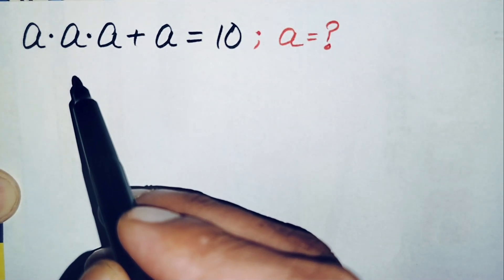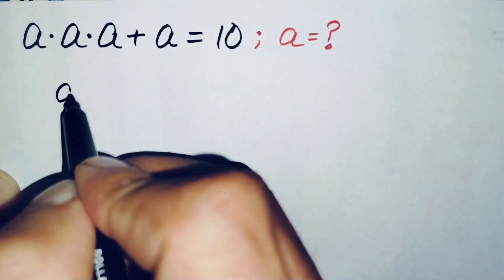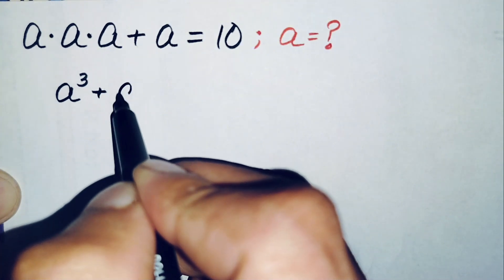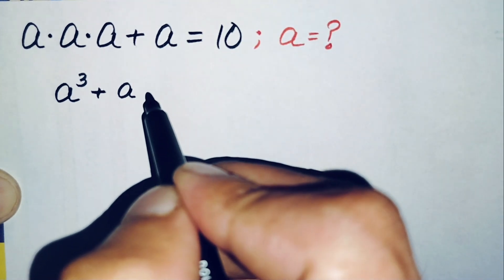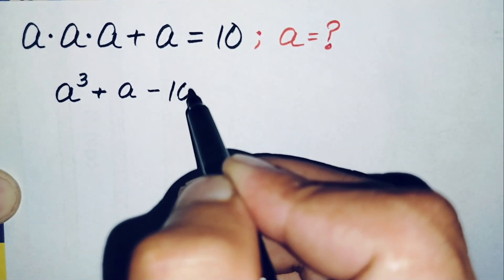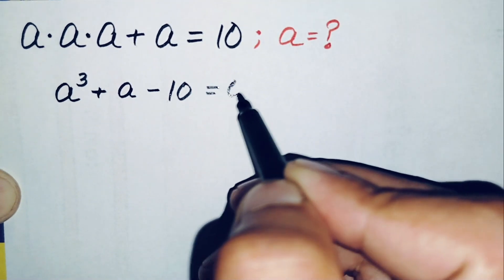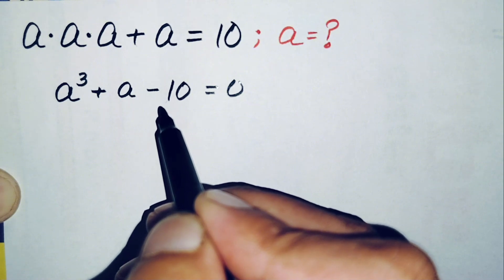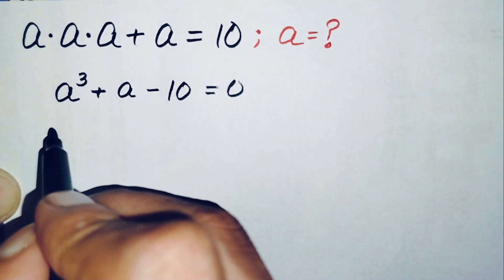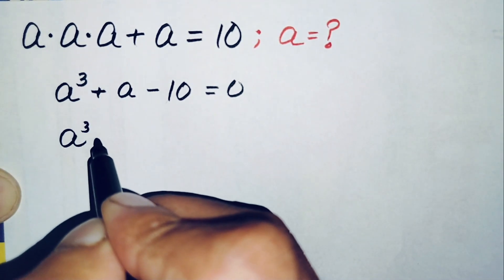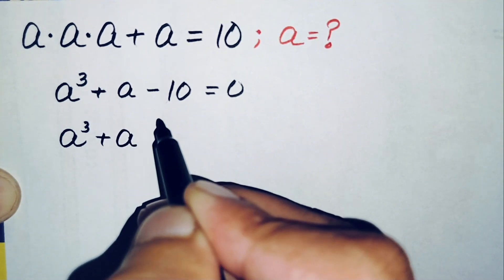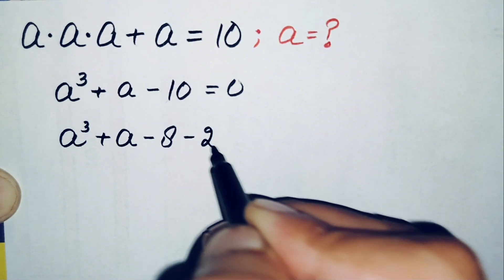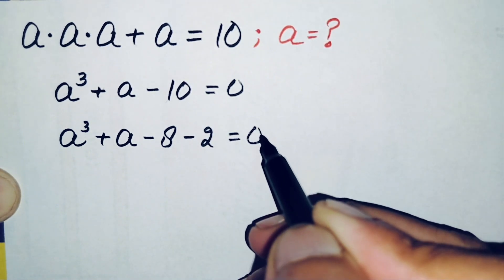Here a is multiplied 3 times, so we can write this as a cube plus a. And here we will move this 10 to the left hand side, so this will become negative 10 is equal to 0. So next we will split this minus 10 into the sum of minus 8 minus 2, so this will become a cube plus a minus 8 minus 2 is equal to 0.